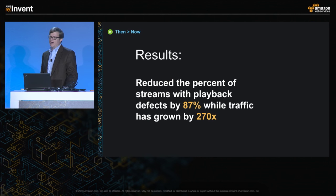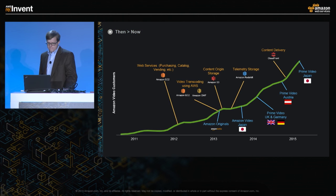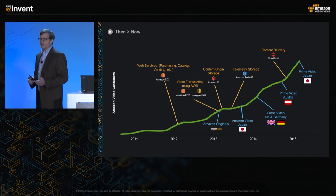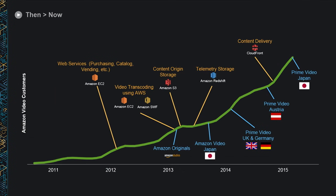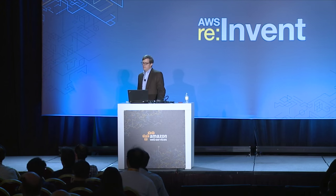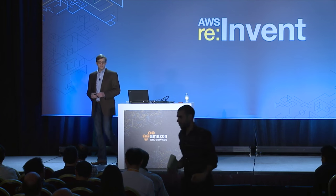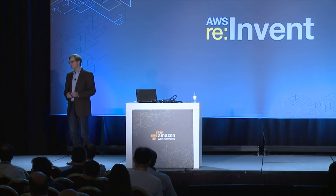I'd like to thank the teams in Seattle, London, and Bangalore for their hard work in making those improvements possible. Here you can see some of our journey with Amazon Video and AWS — it's definitely a partnership where we have scaled and increased our adoption of AWS over time. You can see key milestones such as our recent launch of Prime Video in Japan, and milestones where we adopted EC2 for video transcoding and our accelerated adoption of CloudFront as well. With that, I'm going to turn it over to Prasad, who's going to explain some of the specific details of how the CloudFront team has innovated to support Amazon Video.